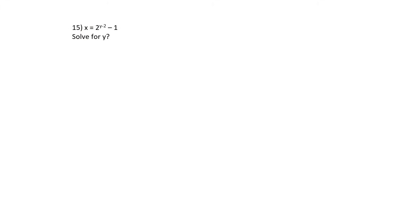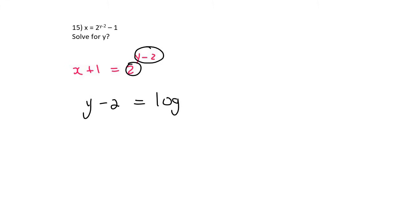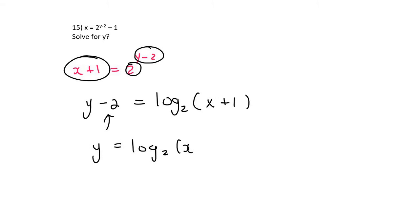For question 15, take the minus 1 over first: x + 1 = 2^(y−2). We're trying to find y, which is in the exponent, so use logs. The exponent equals log of the base (2), and whatever else is on the other side goes in a bracket: y − 2 = log₂(x + 1). Then take the minus 2 over, giving the final answer y = log₂(x + 1) + 2.